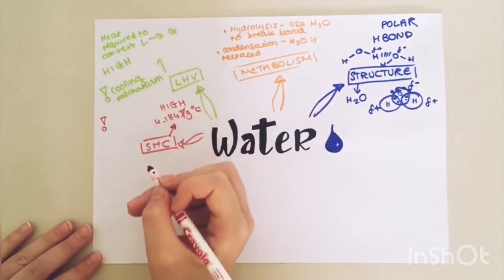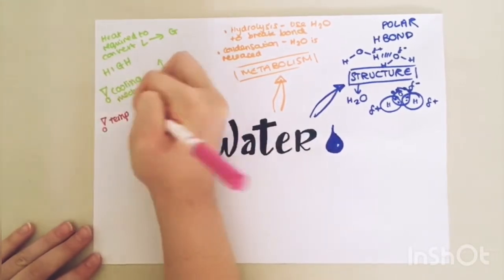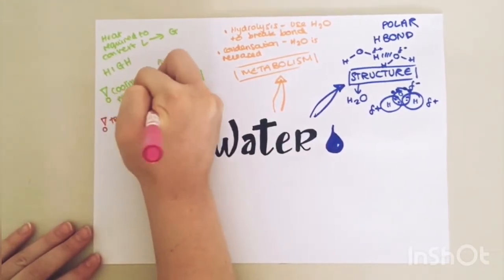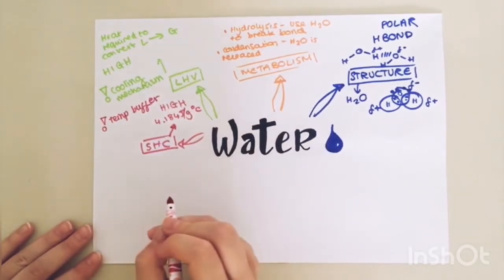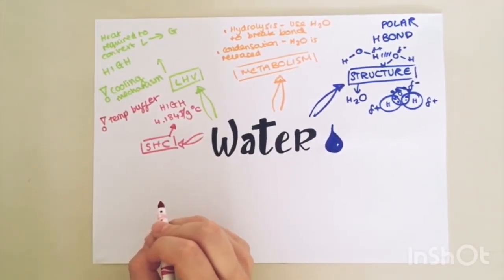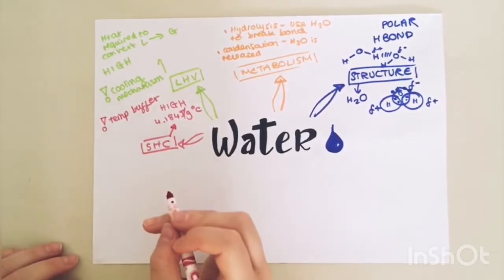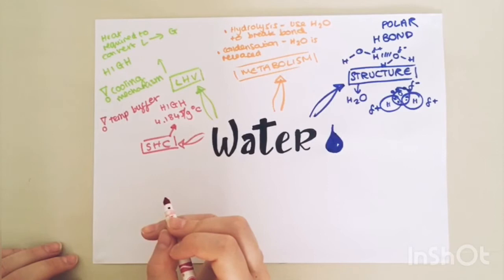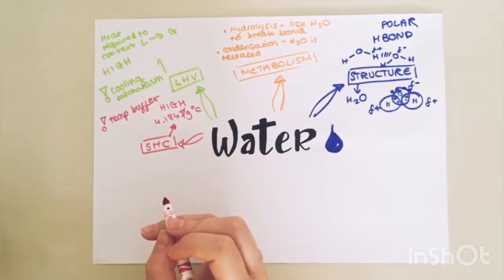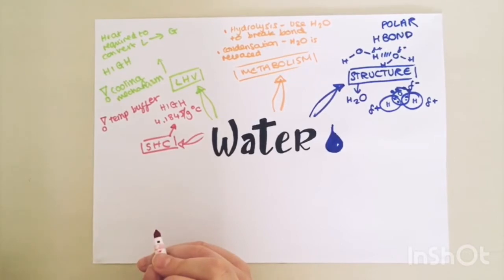The biological importance of this is that water can act as a temperature buffer, so it can resist changes in temperature. For example, it allows us to have a thermostable internal environment so that we provide the right temperature within our bodies for enzymes to work. Also, it makes water a really good habitat as the temperature underwater is likely to be more stable than on land, so organisms can live in extreme climates underwater.